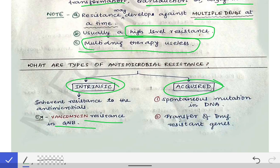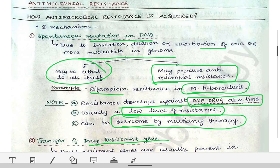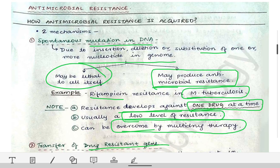Acquired antimicrobial resistance can develop due to spontaneous mutation in the DNA or due to the transfer of drug-resistant genes. This covers the mechanisms of acquiring antimicrobial resistance. Next, we will discuss the mechanisms of antimicrobial resistance.